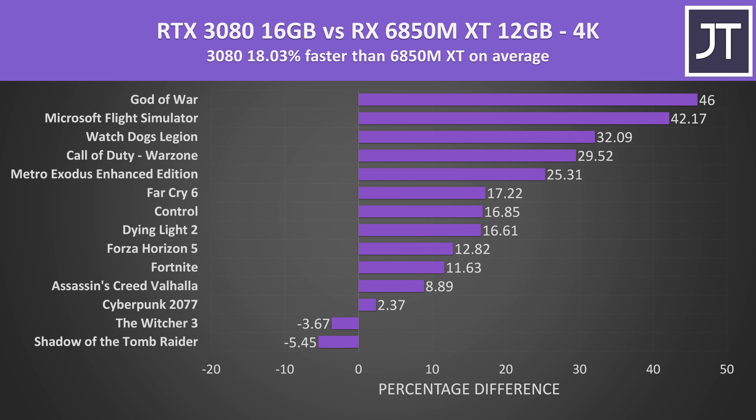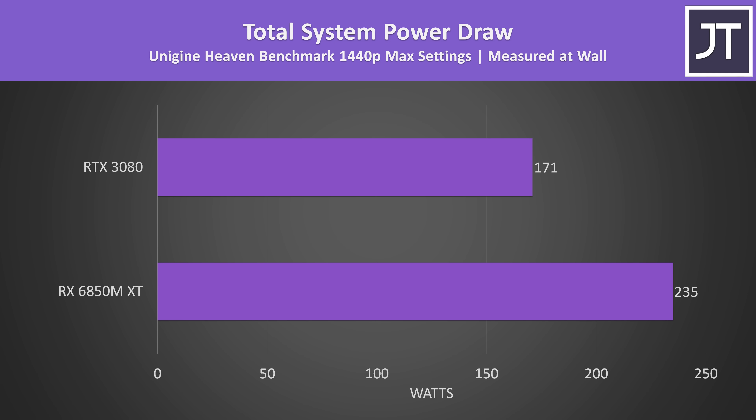Not only was the 3080 generally performing better, but it was doing this while consuming less power. This is the total power drawn at the wall, including both the XG Mobile eGPU and the Flow Z13 tablet — so the Intel CPU and everything else. The Radeon GPU was using 37% more power, quite a big difference considering that even in the absolute best case the 3080 was only 13% slower.